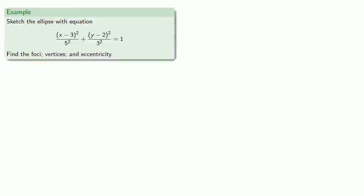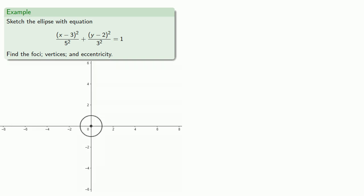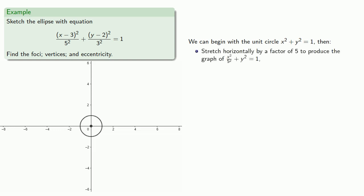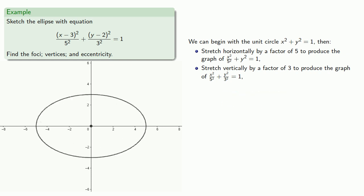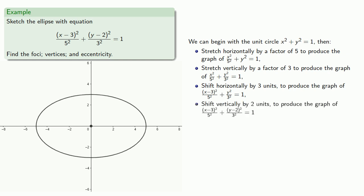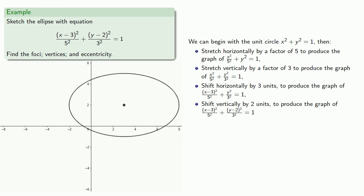For example, let's sketch the ellipse with this equation — we'll find the foci, the vertices, and the eccentricity. Let's think about this as a transformation. We could begin with the unit circle x squared plus y squared equals 1, then stretch horizontally by a factor of 5, stretch vertically by a factor of 3. These two transformations get us the ellipse, although it's not in the right place. To move it to the right place, we need to shift horizontally by 3 units, and then shift vertically by 2 units.